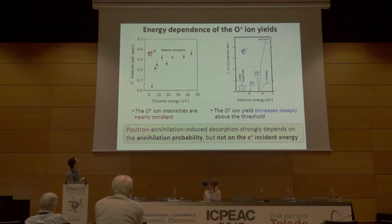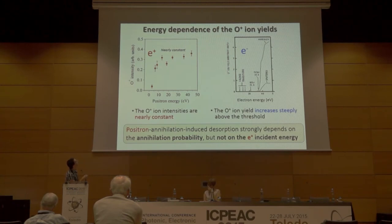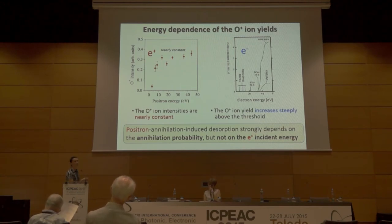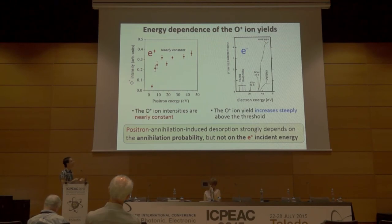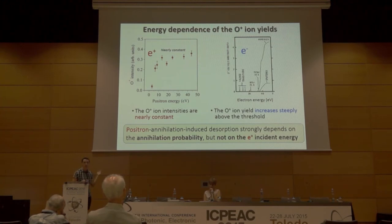If we extract the O+ ion intensities from the time-of-flight spectra and plot them as a function of positron energy, we can see that above about 7 eV the O+ ion yield is nearly constant as a function of energy. This is very different from the electron case, where the O+ ion yield increases rapidly with incident energy. Therefore, we know that the annihilation probability does not strongly depend on the incident energy, and we believe the positron annihilation-induced desorption strongly depends on the annihilation probability but not on the incident positron energy.